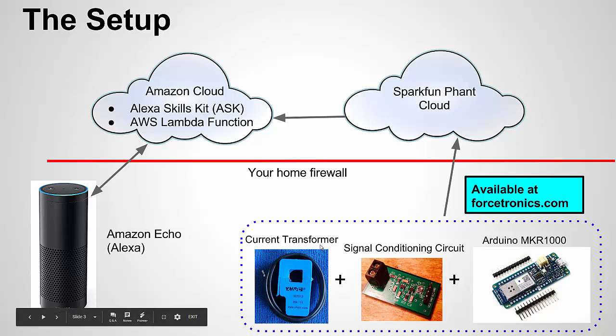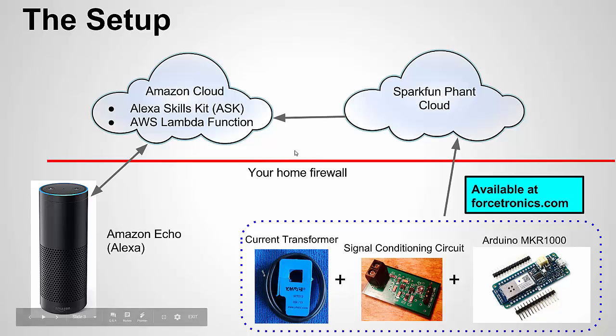Here in part four we're going to get into the hardware — the current transformer, the signal conditioning circuit for the AC output from the current transformer, and the Arduino Maker 1000. I originally wanted to use the NodeMCU, but the Maker 1000 has a much better ADC. I decided at the last minute to go with the Maker 1000 because I needed good resolution to monitor the washer. I'll point you to a video series if you want to use the NodeMCU instead. You can get an Arduino Maker 1000 and the signal conditioning circuits at Forcetronics.com.